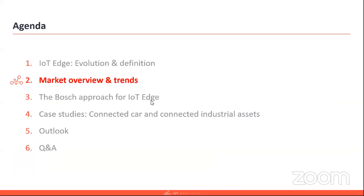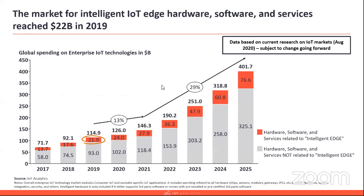Let's have a look at the market overview and trends. This is a high-level view of how we look at global spending on enterprise IoT technologies. This is a triple-digit billion dollar market in our view — obviously right now affected by COVID, but still growing. We believe there are a lot of signs that this is going to be accelerating again from 2021 onwards. The intelligent edge plays an important role in there. The hardware, software, and services related to intelligent edge we estimate to be at around $22 billion in 2019, and this is going to grow quite quickly.